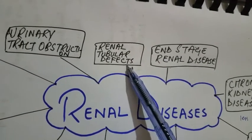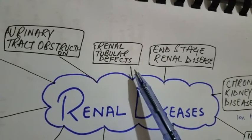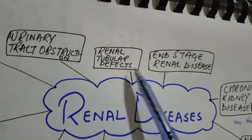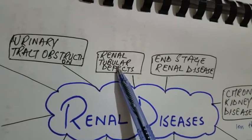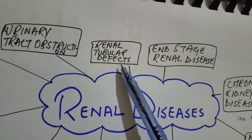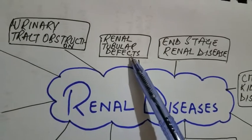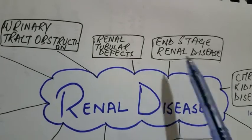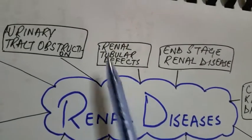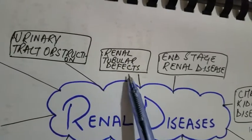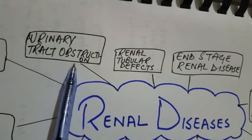Renal tubular defect is dominated by polyuria, electrolyte imbalance, and nocturia. Examples include metabolic acidosis, nephronophthisis, medullary cystic disease, nephrogenic diabetes insipidus, cystinuria, and renal tubular acidosis. It may also be an acquired renal tubular defect, known as lead nephropathy.